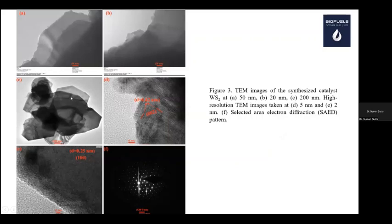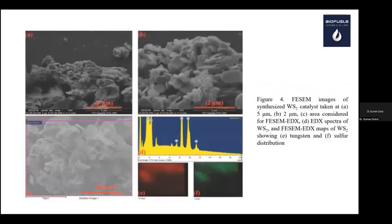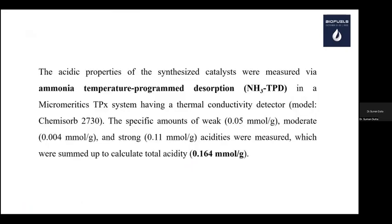The TEM micrographs confirm a multi-layered structure, and we can also check the SAED pattern to confirm our claims. Additionally, FESEM images and elemental analysis were done, including elemental mapping. From the maps, we can see that the tungsten and sulfur distribution is almost uniform, confirming that sulfur and tungsten are uniformly distributed.